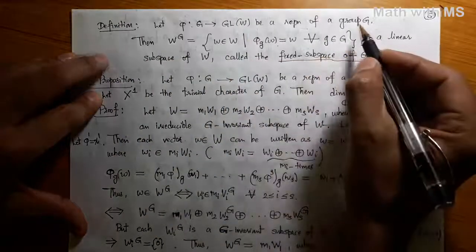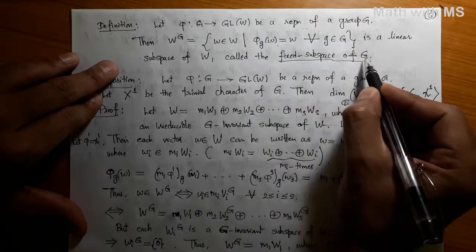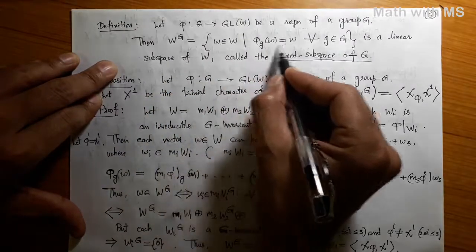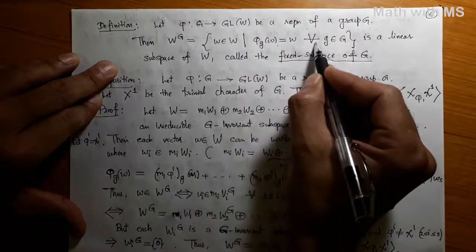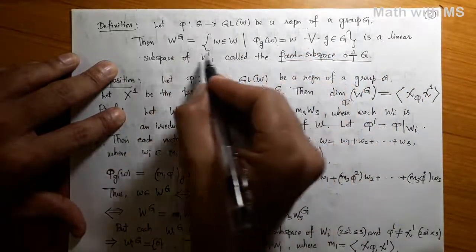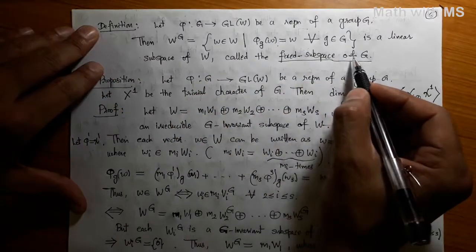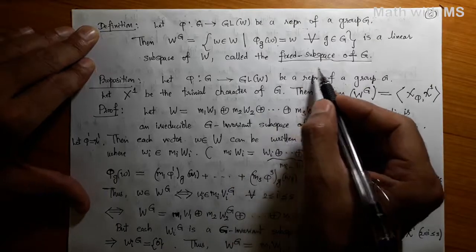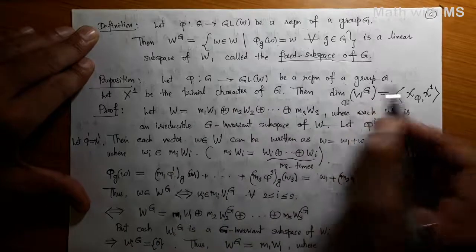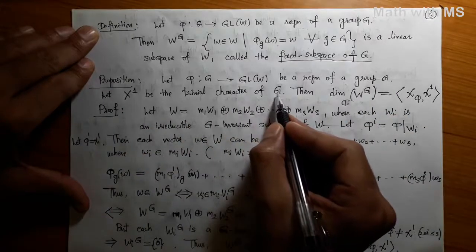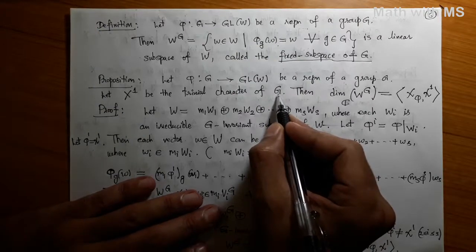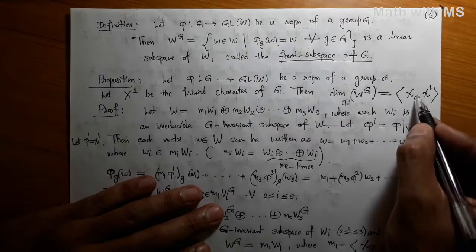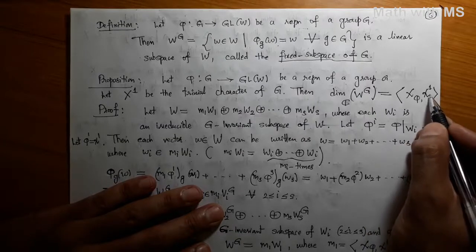Let us give one definition. Let phi from G to GL(W) be a representation of a group G. Then one can define the fixed space W superscript G, which consists of all those vectors in W which are fixed by every group element under the representation. It is trivial to check that W superscript G is a linear subspace of W. We call it the fixed subspace of G.